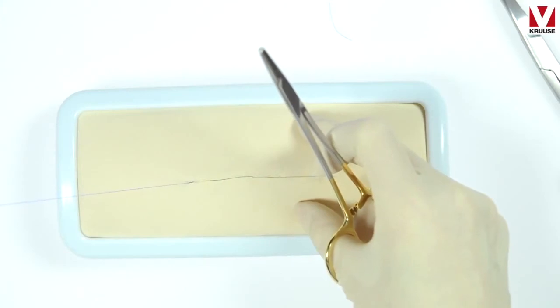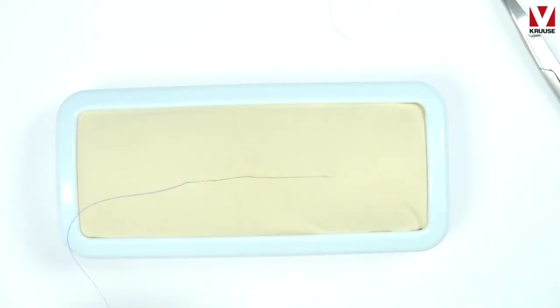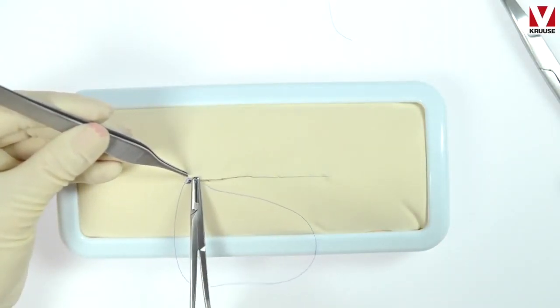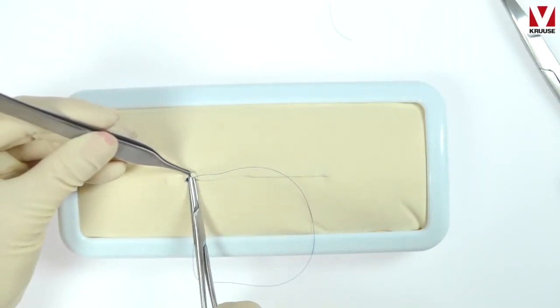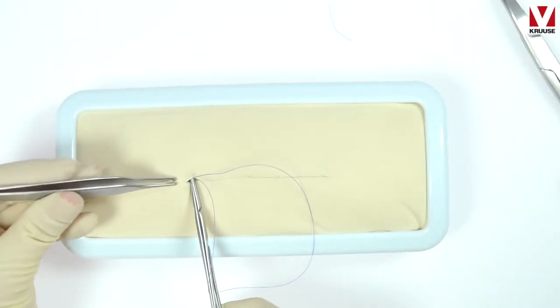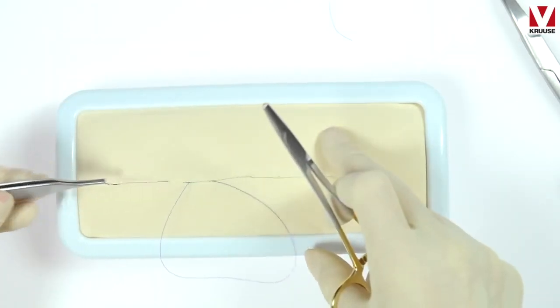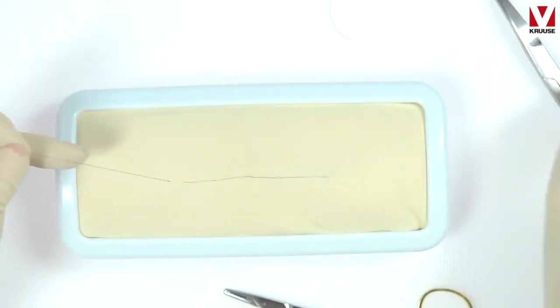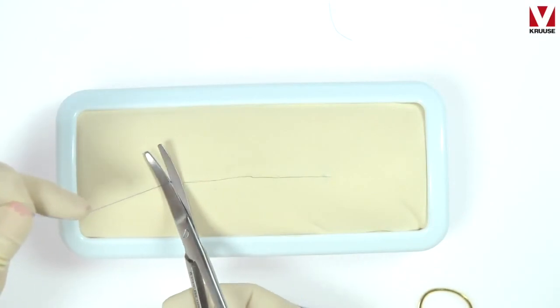Then I load the needle holder with my needle again. And I go behind the knot that is buried. And I am careful not to touch or damage the suture with my needle. I go up one centimeter from the incision, tighten it, take my suturing scissor and cut.